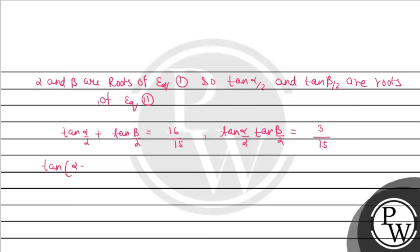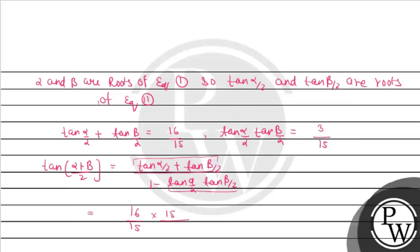Now we find tan((α+β)/2) = [tan(α/2) + tan(β/2)] / [1 - tan(α/2)·tan(β/2)]. Substituting the values: (16/15) / (1 - 1/5) = (16/15) / (12/15) = 16/12 = 4/3.